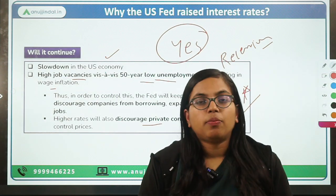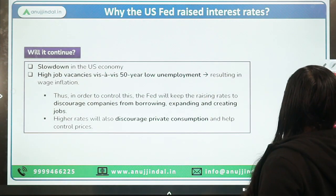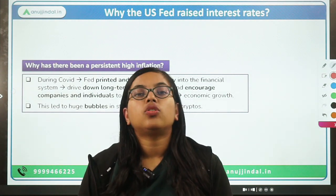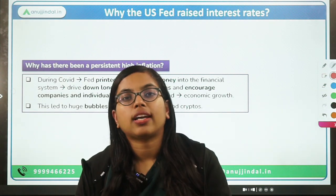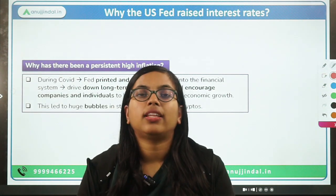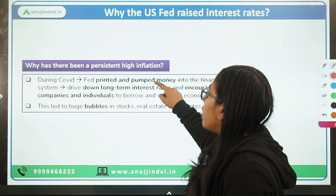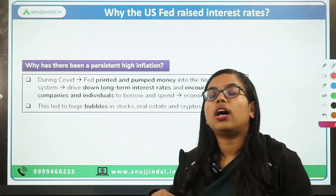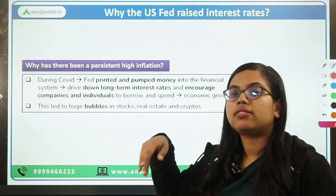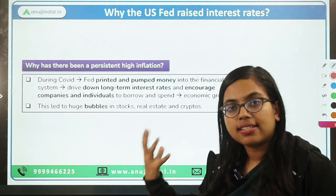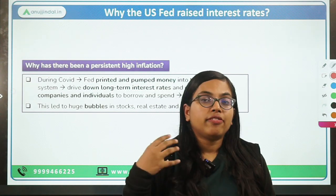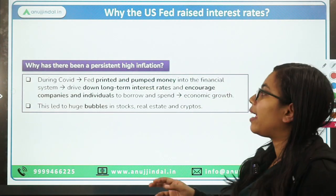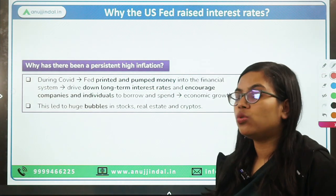The inflation happened because of the COVID pandemic, where the government or the Federal Reserve had been printing and pumping more money into the economy so that people could be encouraged to spend on consumption to boost overall demand and thereby boost the economy. That printing and pumping of money into the financial system resulted in inflation because it led to a decrease in the long-term interest rate. So the policy rate will have to be increased from time to time until we achieve a stable level of inflation as well as boost growth.